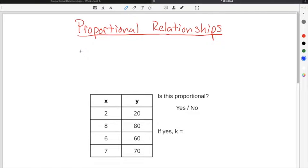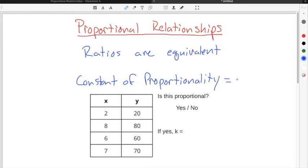A proportional relationship is a relationship between two variables where their ratios are equivalent. Another way to think about this is that one variable is always a constant value times or divided by the other variable. This constant value is called the constant of proportionality. The constant of proportionality is always represented by the variable k.